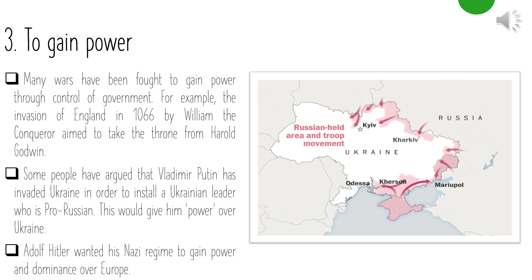Three: to gain power. Many wars have been fought to gain power through control of government. For example, the invasion of England in 1066 by William the Conqueror aimed to take the throne from Harald Godwinson. In a more modern context, some believe Vladimir Putin invaded Ukraine to install a pro-Russian Ukrainian leader, giving him power over Ukraine. Another example is Adolf Hitler, who wanted his Nazi regime to gain power and dominance over Europe.